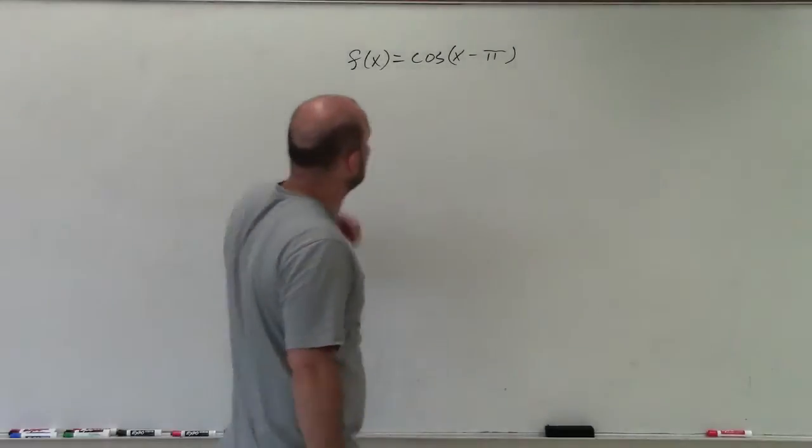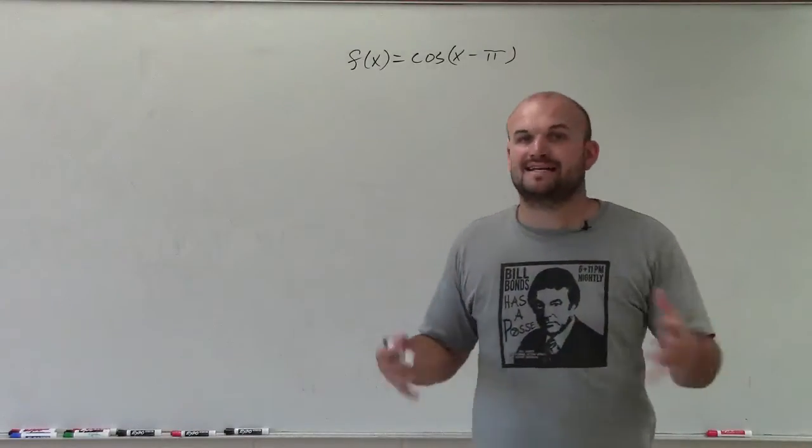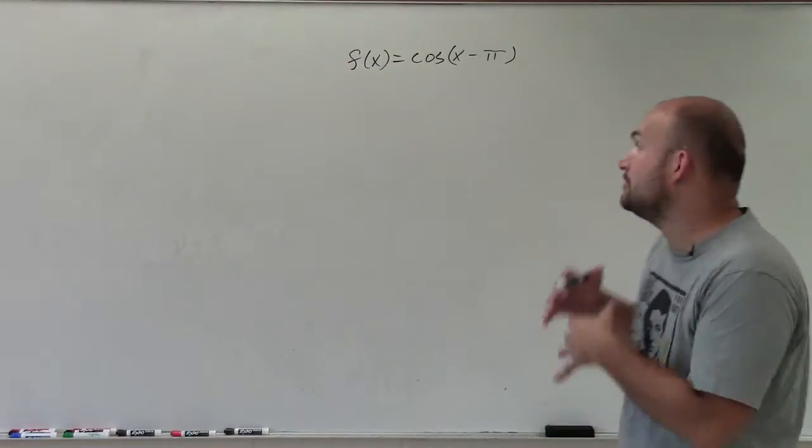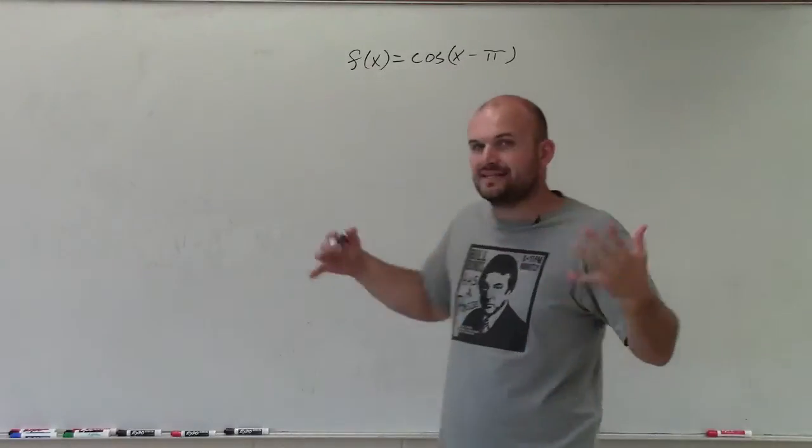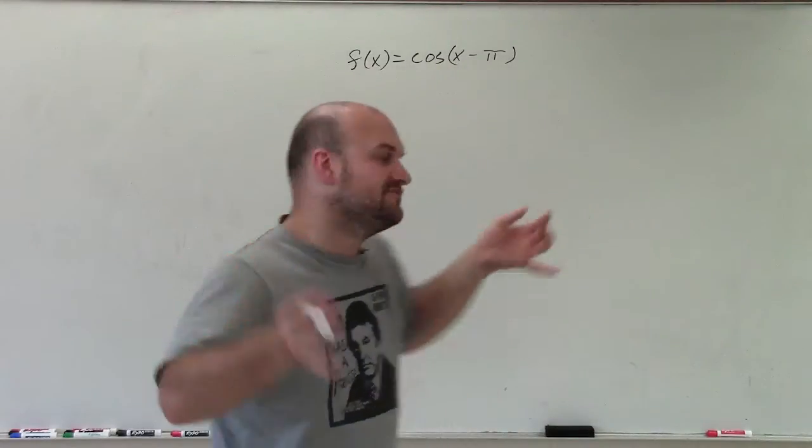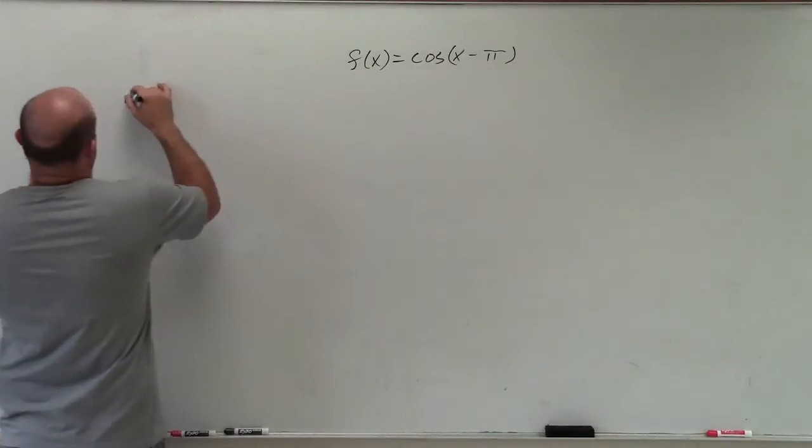Welcome. All right, so to graph this, what I have is f(x) = cos(x - π). The only thing I notice from my parent graph is I'm just subtracting π. So what exactly does that mean?